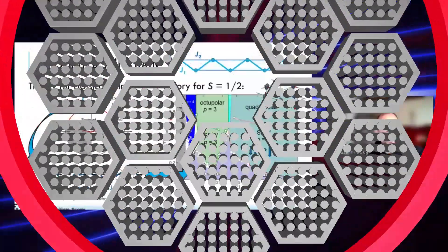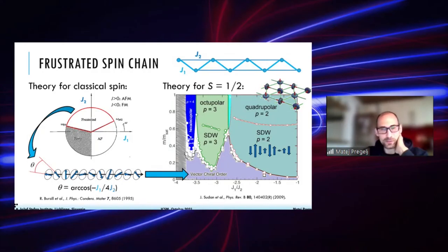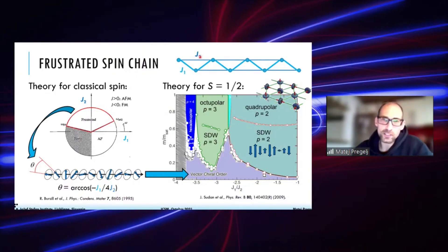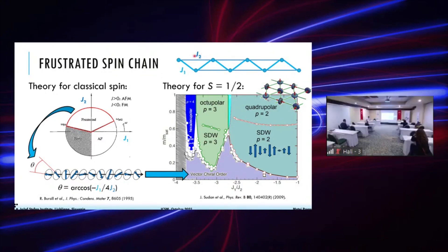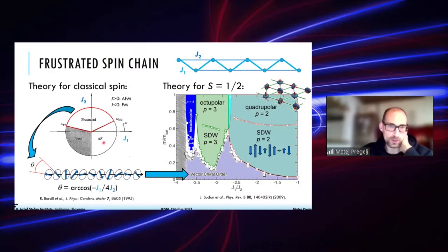Here is a short introduction to the spin chain. With just nearest-neighbor interaction you have a normal chain, but when you introduce second-nearest or next-nearest-neighbor interaction, denoted here by J2, you get the frustrated chain, also called the zigzag chain. This is the classical phase diagram.